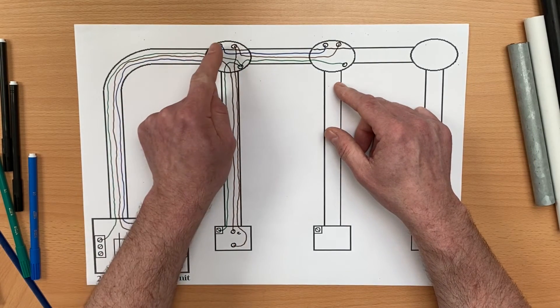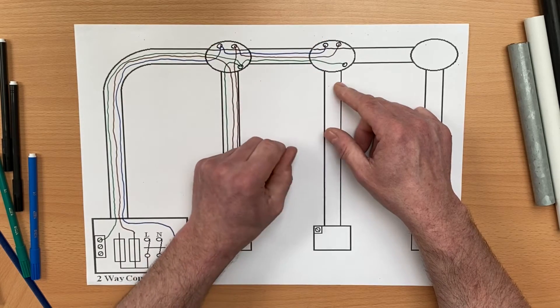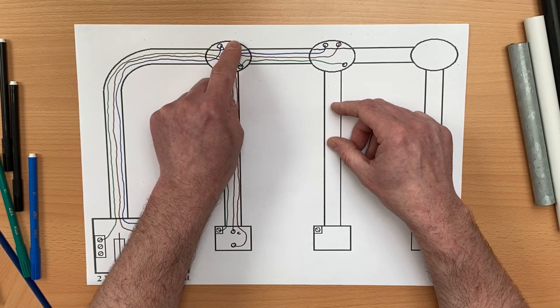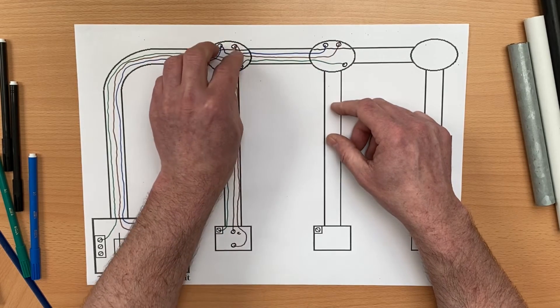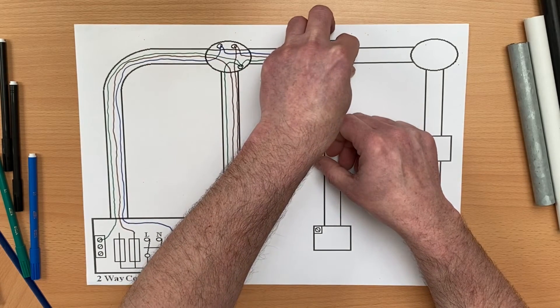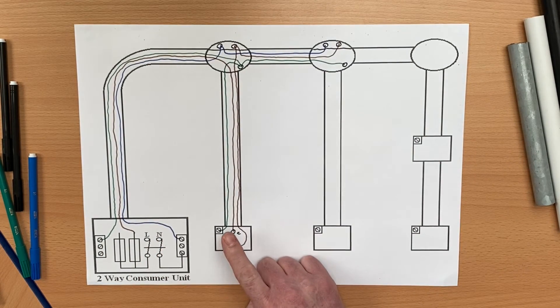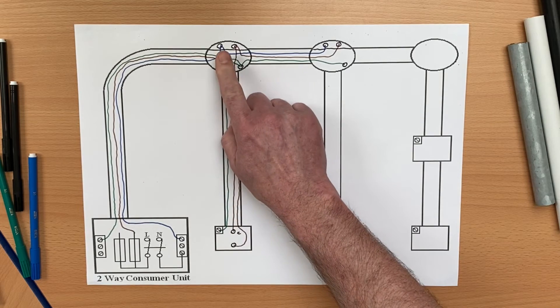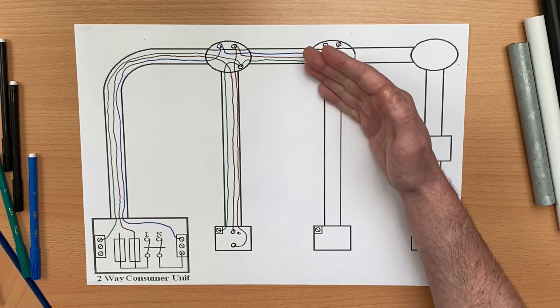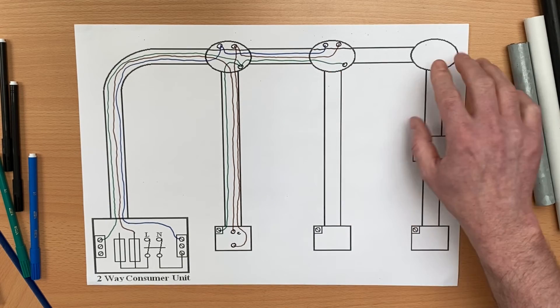When I turn on this switch, I turn on this light, and because I've shared a neutral across—it needs a neutral, a CPC across to make it safe—and I've shared the switching line conductor across to here, when this lamp illuminates, might be a fluorescent light fitting, this one here will also illuminate. Meaning that this one-way switch now turns on this light and this light.